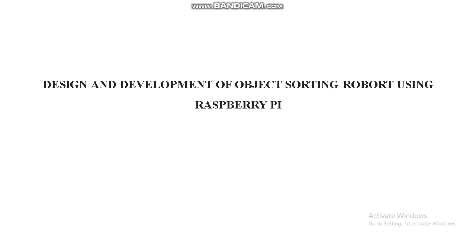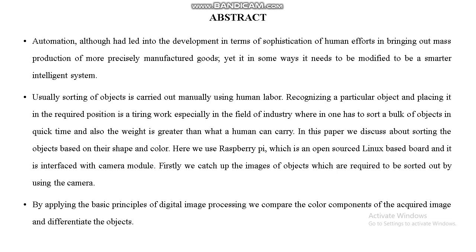Today we are going to see the design and development of an object sorting robot using Raspberry Pi. Using Raspberry Pi, we can segregate objects based on their shape and color. We capture images of objects which are to be sorted by using the camera, and by applying the basic principles of digital image processing, we can segregate the objects by their shapes.